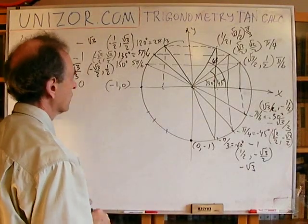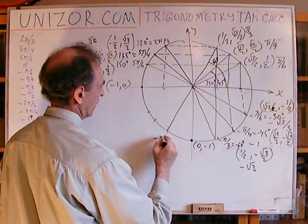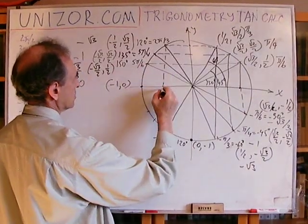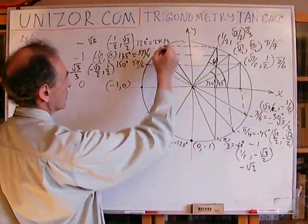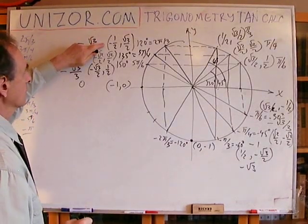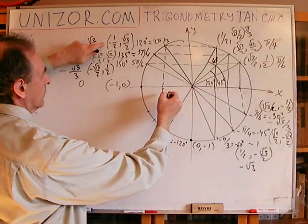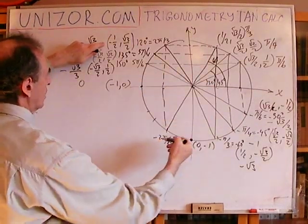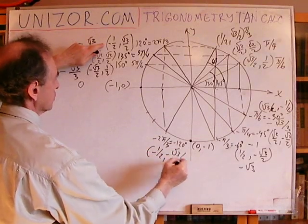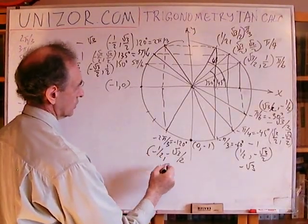Next is −2π/3, which is −120 degrees. By obvious symmetry with +2π/3, I retain the abscissa and change the ordinate to opposite. The coordinates are (−1/2, −√3/2), and their ratio — both negatives — gives √3.